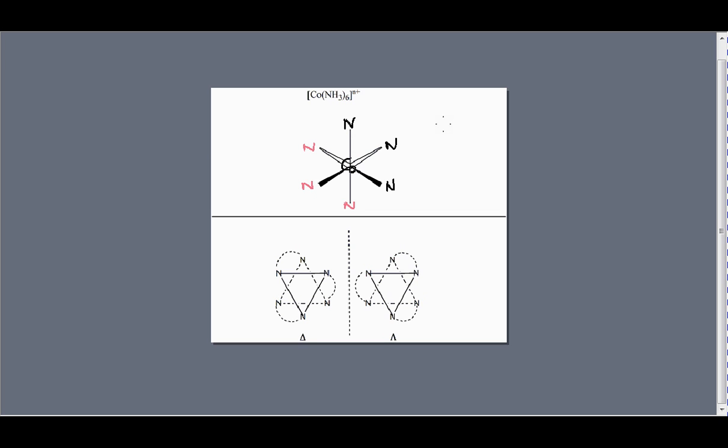If we consider that we could use another type of ligand and still have 6 nitrogens around, but this time the nitrogens are linked to one another in pairs.